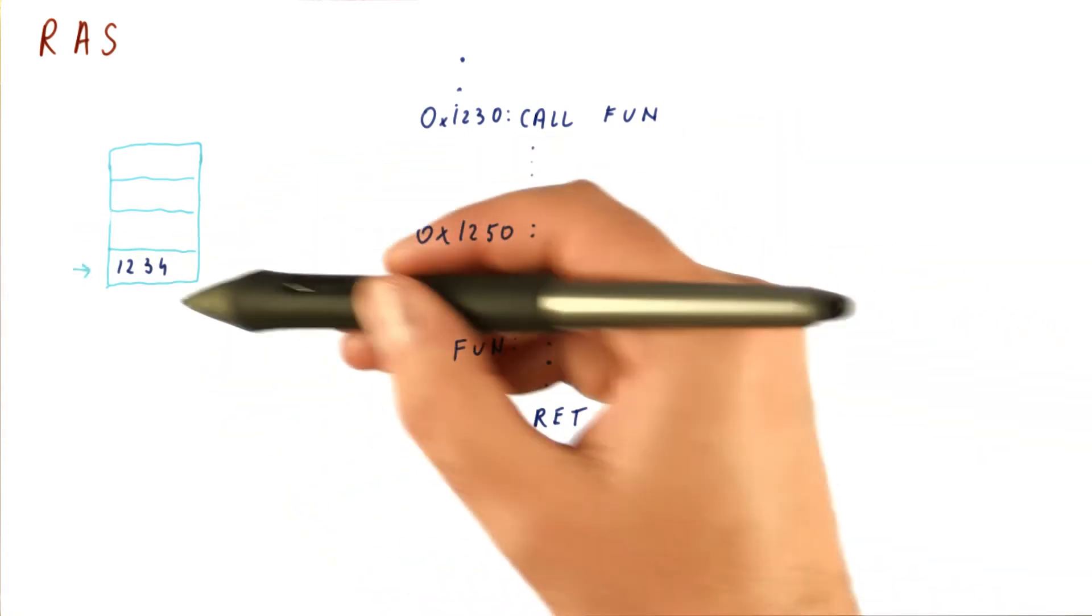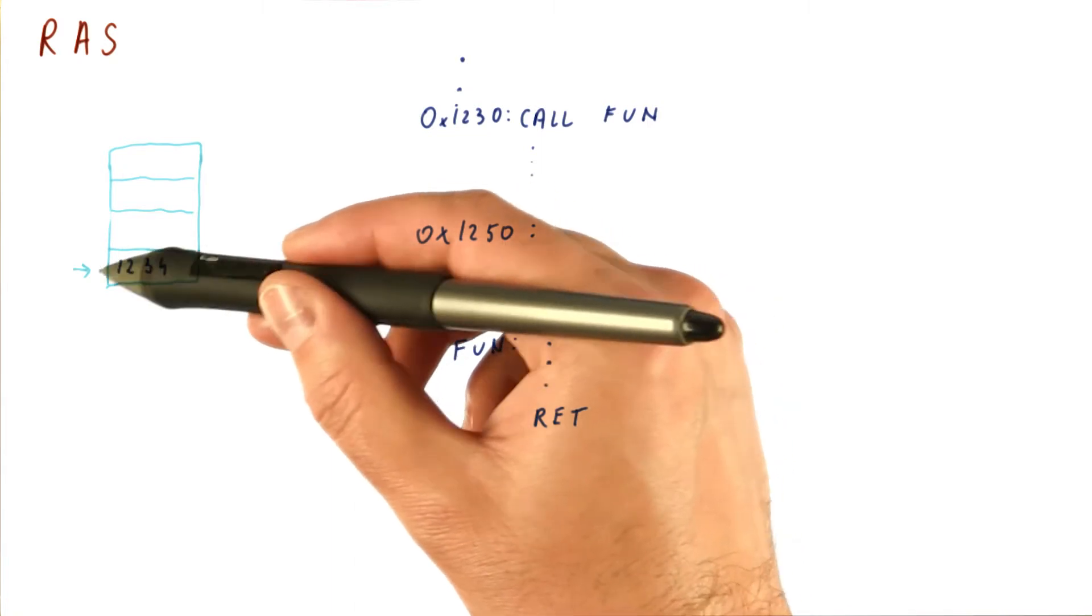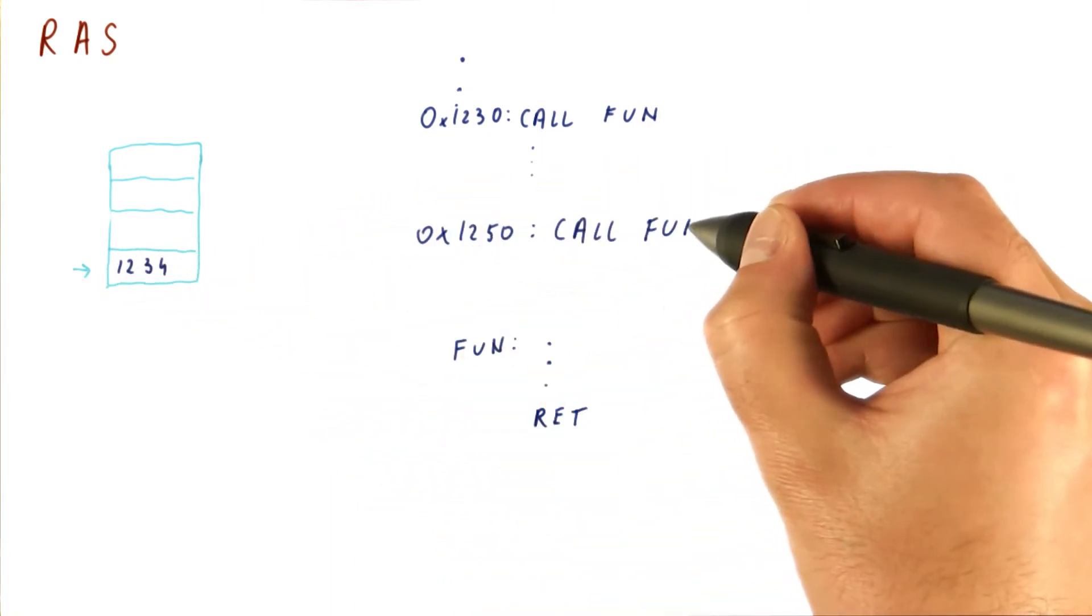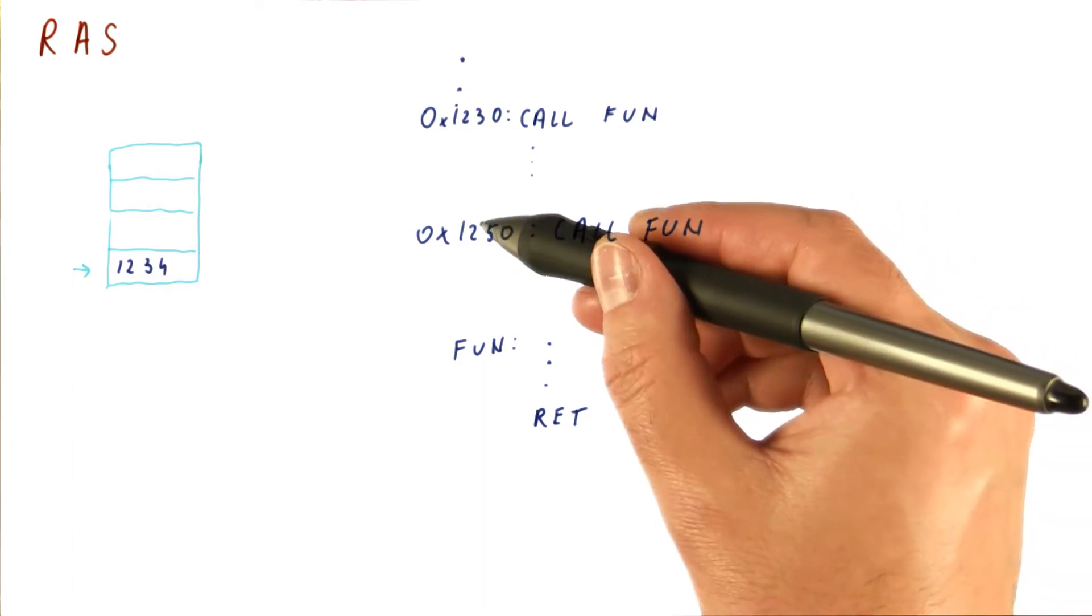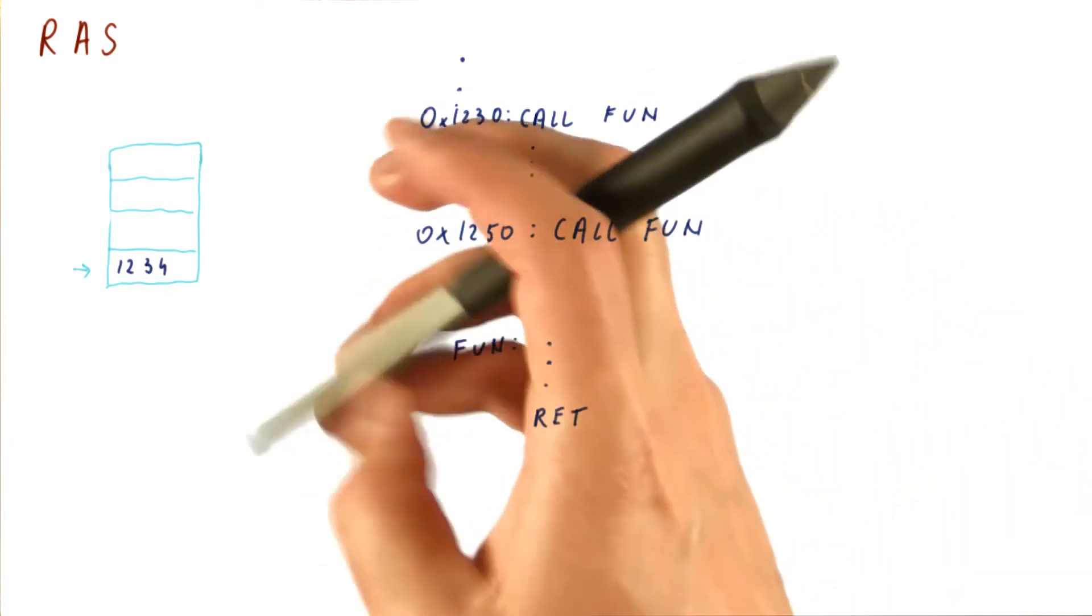Now our pointer is here. We don't really have to delete this entry because the pointer being here means that it's free. Next, when we reach the next place where the function is called from, we will save the return address, in this case 1254, onto the return address stack.